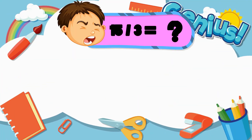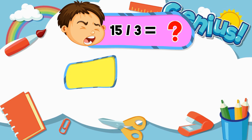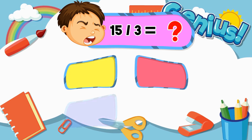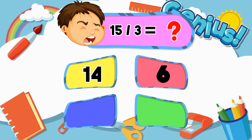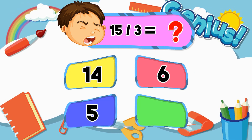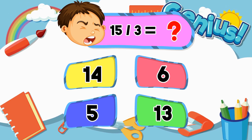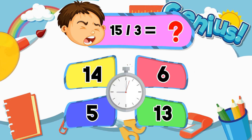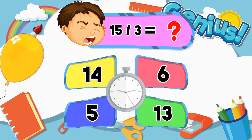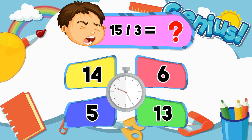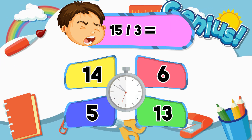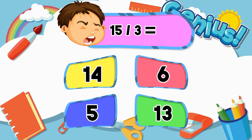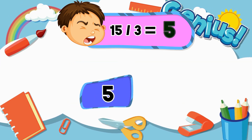What is 15 divided by 3? Options: 14, 6, 5, 13. Answer: 5.